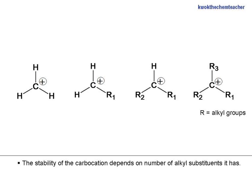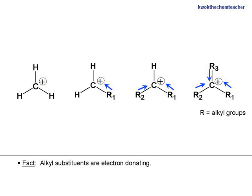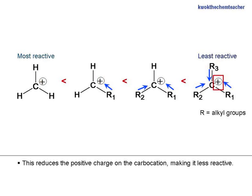The stability of the carbocation depends on the number of alkyl substituents it has. Alkyl substituents are electron donating. This reduces the positive charge on the carbocation, making it less reactive.